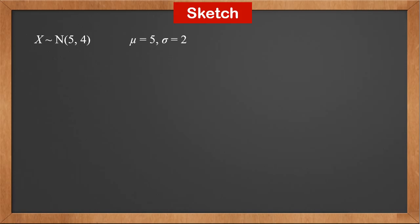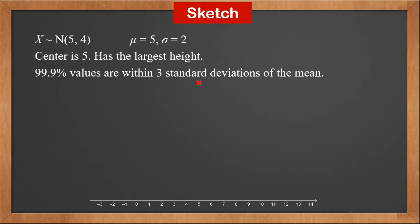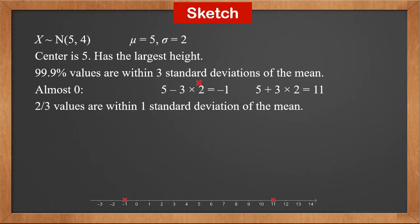Now let's see how to sketch a bell curve based on those properties. Here's a normal distribution N(5, 4). The mean, mu, is 5. The standard deviation, sigma, is 2. The center is 5, which has the largest height — we mark this point. 99.9% of values are within 3 standard deviations: mu minus 3 sigma is 5 minus 6, which is negative 1; mu plus 3 sigma is 5 plus 6, which is 11. The height of these two points is almost 0. Two thirds of values are within 1 standard deviation, so at points 3 and 7, the height is about 60%. With these 5 points, we can sketch a bell curve. Try to make it as symmetric as possible.